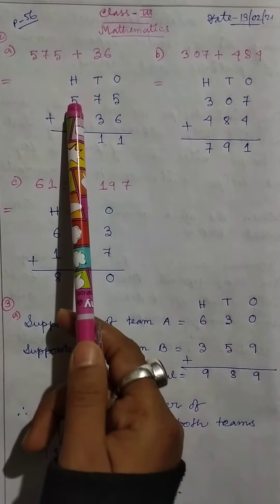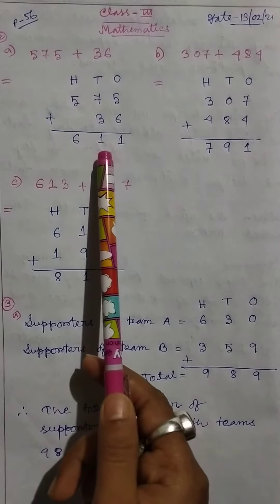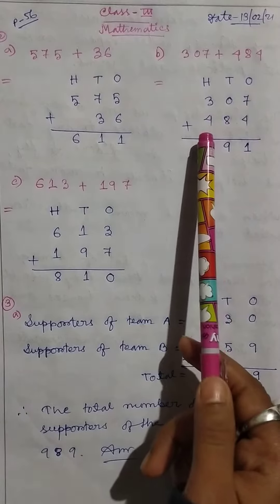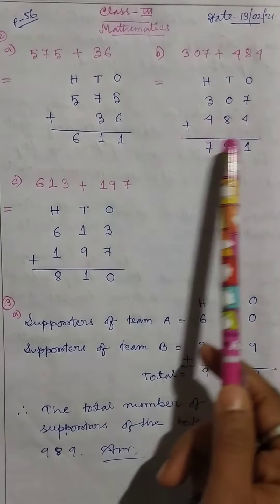1 plus 5 equals 6, so the answer is 611. Then 307 plus 484 equals 791.